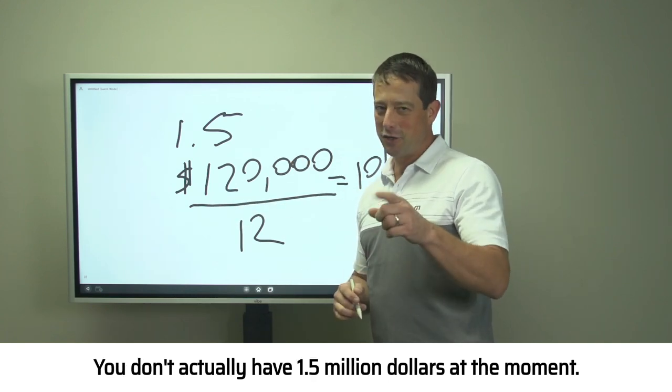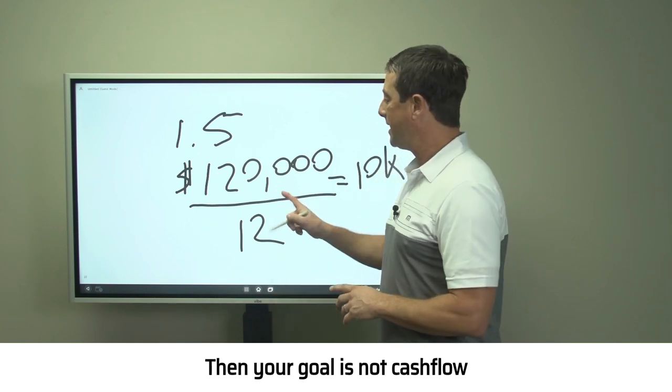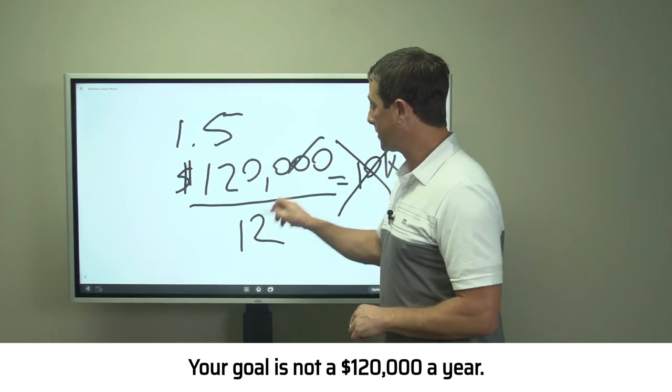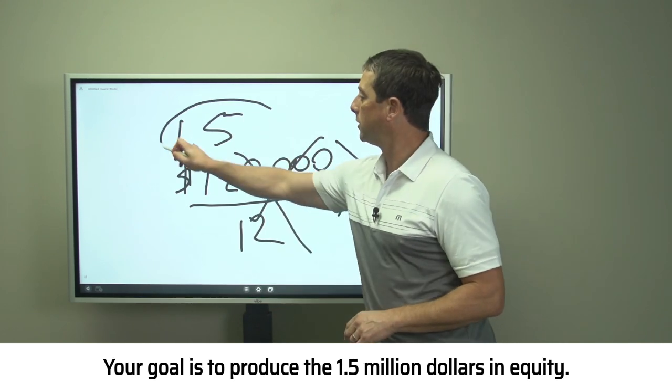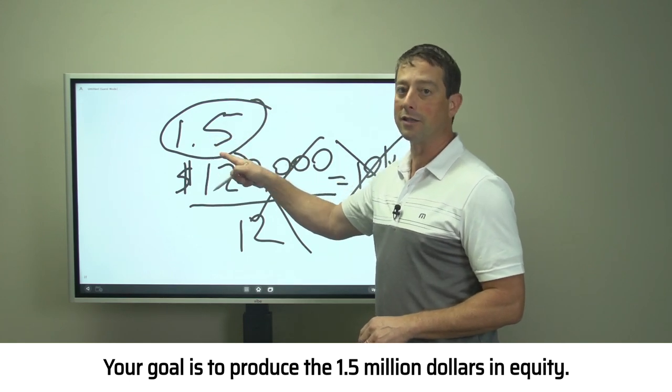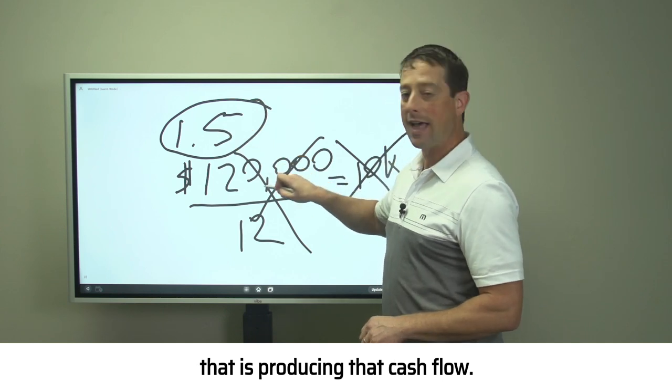If you have 1.5 million dollars, all you have to do is invest that in real estate at an 8% return and boom, you get $10,000 a month. Let's assume you don't actually have 1.5 million dollars at the moment. Then your goal is not cash flow—your goal is to produce the 1.5 million dollars in equity that is producing that cash flow.